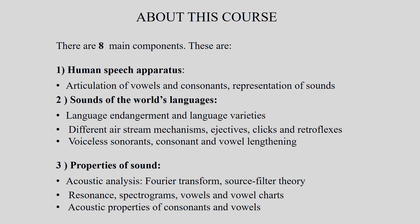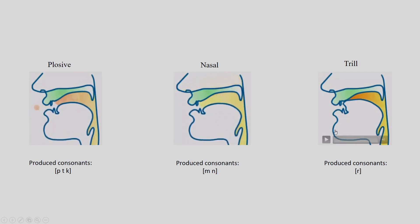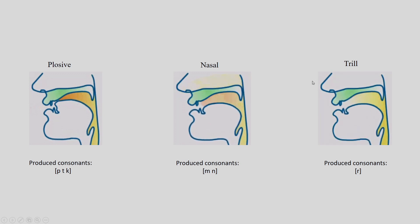In this course, there will be mainly eight components. The first part is the human speech apparatus, where we talk about articulation of vowels and consonants and representation of sounds. In that part, we will look at how sounds are produced. I am showing a short clip here where we will discuss how sounds are produced with these kinds of short clips.